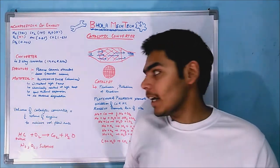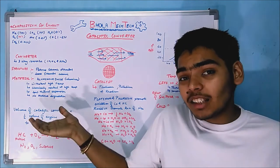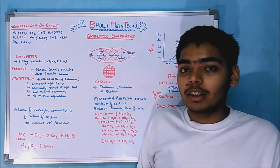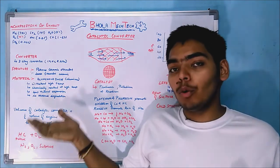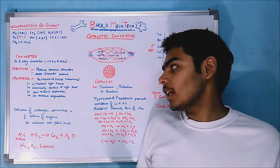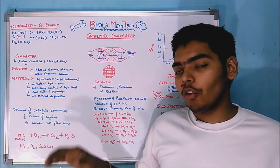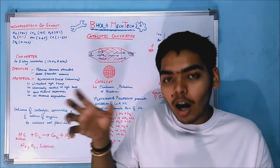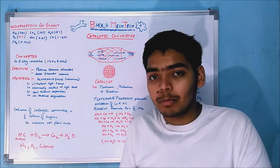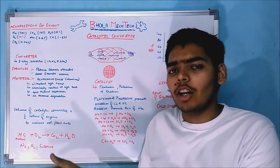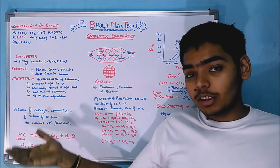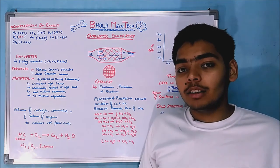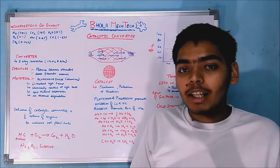Alumina is used because it can withstand high temperatures, is chemically neutral at high temperature, has very low thermal expansion, and undergoes no thermal degradation — most materials do not possess all four of these properties. The volume of the catalytic converter required is approximately equal to half the cylinder displacement volume, which is the calculated value used to size it.